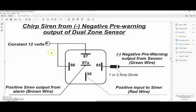In this short video I want to show you how you can take a single pole double throw relay and use it to create a really neat little feature which is chirp siren output from a negative pre-warned output from anything like a dual zone shock sensor,